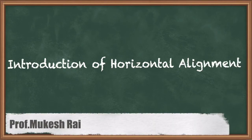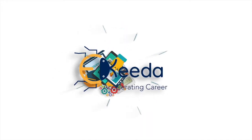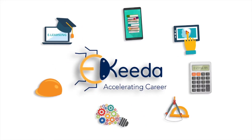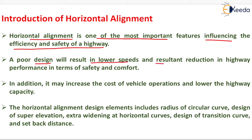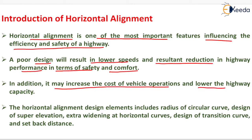Today we are going to study the introduction of horizontal alignment. Horizontal alignment is one of the most important features influencing the efficiency and safety of a highway. A poor design will result in lower speeds and a reduction in highway performance in terms of safety and comfort. In addition, it may increase the cost of vehicle operations and lower the highway capacity.